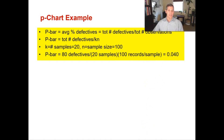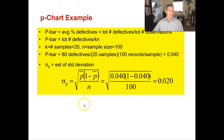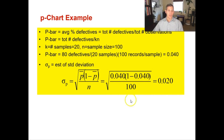Now we calculate the standard deviation. Using P-bar of 0.04: take 0.04 multiplied by (1 minus 0.04), divided by the sample size of 100, then take the square root. That gives you a standard deviation of P equal to 0.02.